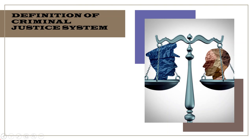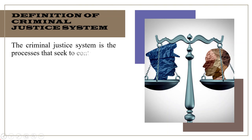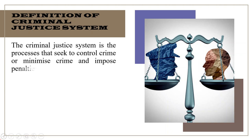The criminal justice system is the process that seeks to control crime or minimize crime and impose penalties for the commission of crimes. The criminal justice system includes the investigation of offenses and the treatment of offenders.